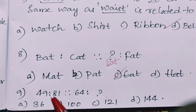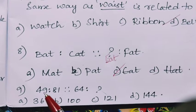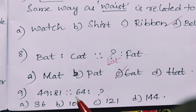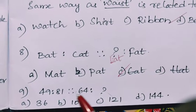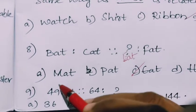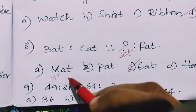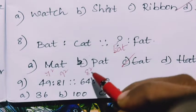Next question is number analogy. Here when you observe the numbers, it is 49 is to 81 and 64 is to what? So when you observe, all are squares. 49 means it is 7 square, 81 is 9 square, 64 is 8 square.